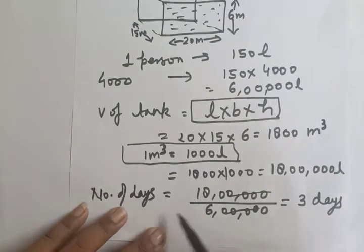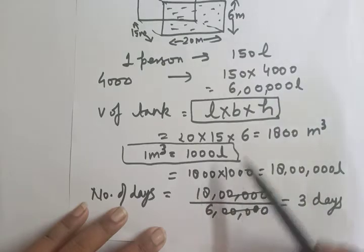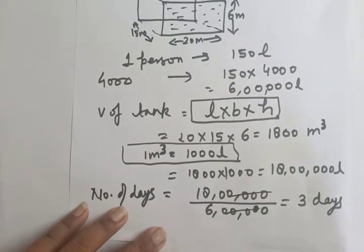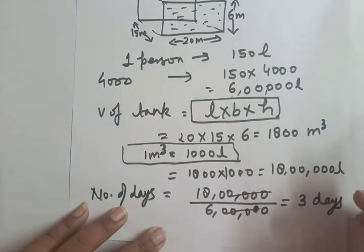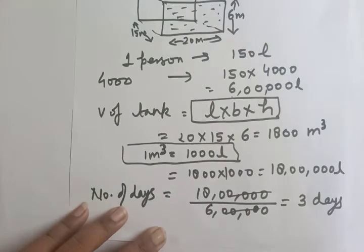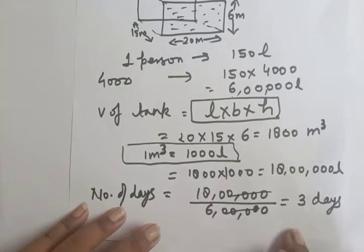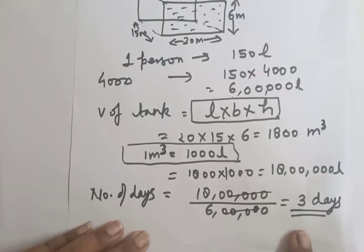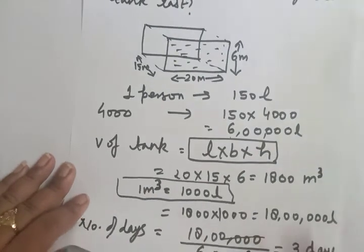To find the number of days: 6 lakh liters is used per day, and the total capacity is 18 lakh liters. Using the unitary method — 1 liter lasts 1/6 lakh days, so 18 lakh liters lasts 18 lakh × (1/6 lakh) = 3 days. I hope this question is clear. We will now proceed to the next question.